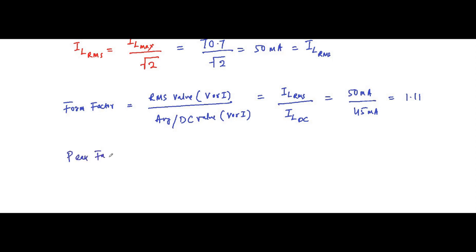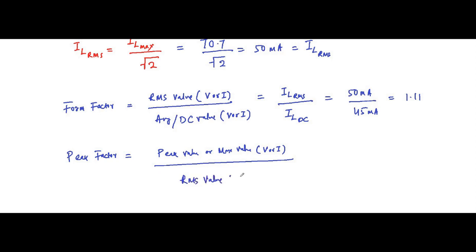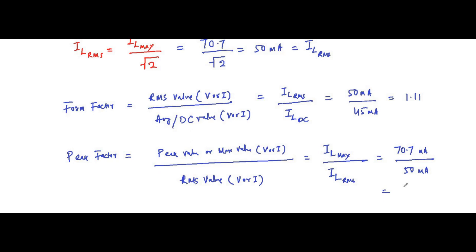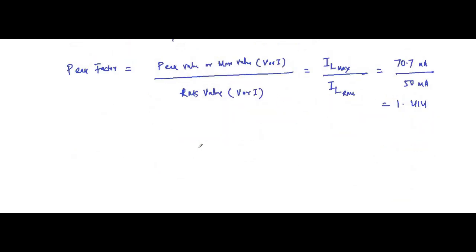Similarly, peak factor equals the peak (maximum) value of voltage or current divided by the RMS value. Here using current values, it is I_L_max divided by I_L_RMS. The maximum value is 70.7 milliampere and the RMS is 50 milliampere, giving a peak factor of 1.414.